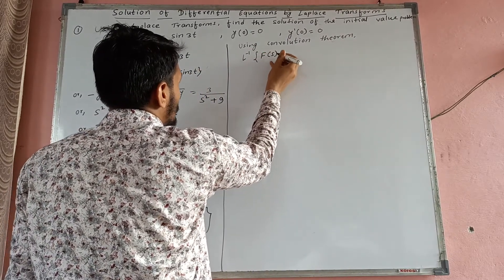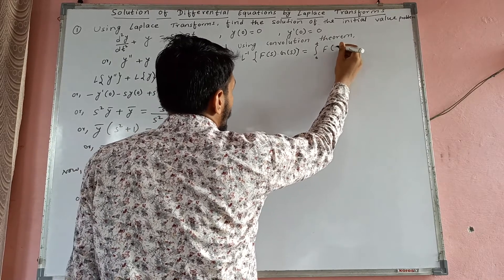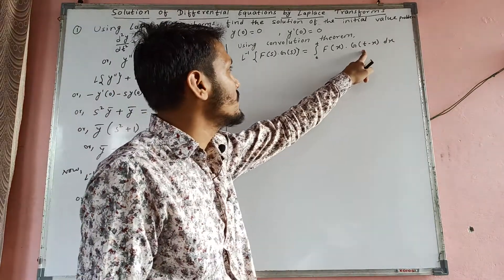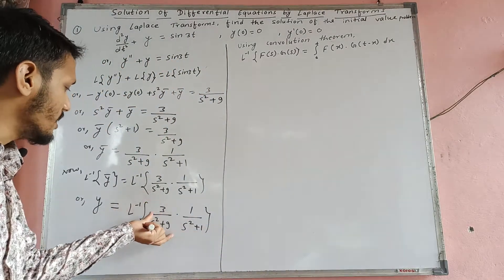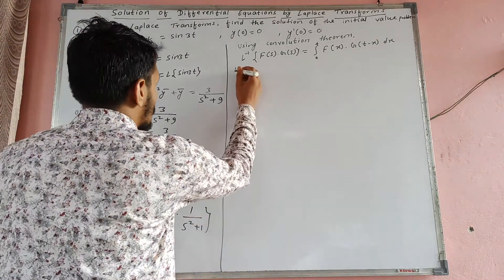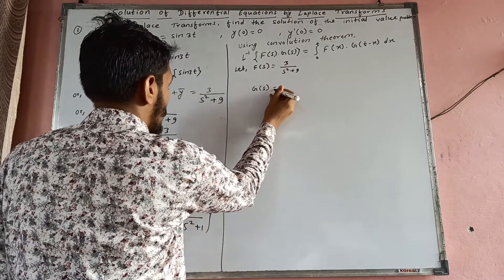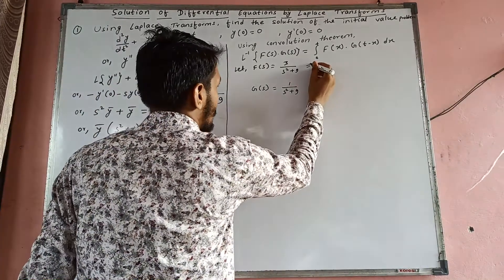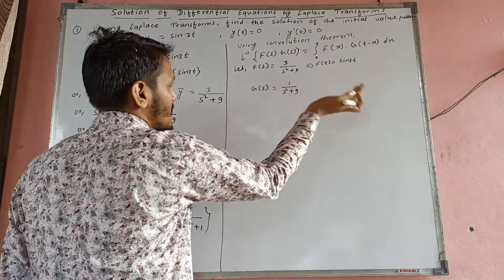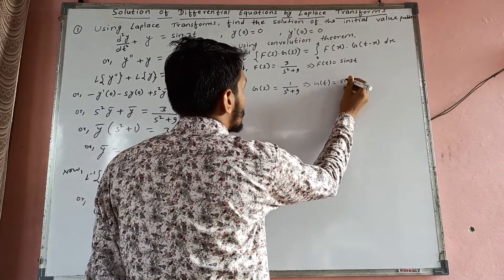Convolution theorem: inverse Laplace of F(s)·G(s) = integration 0 to t of f(x)·g(t-x) dx. F(s) = 3/(s²+9) ra G(s) = 1/(s²+1). Inverse Laplace transform garyo bhane f(t) = sin 3t ayo, ra g(t) = sin t ayo.